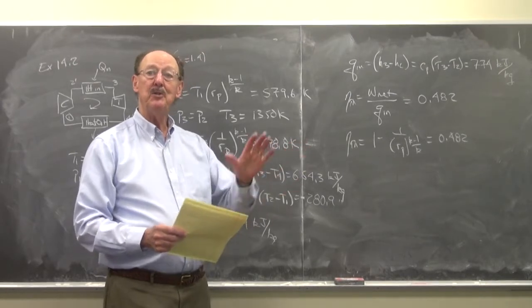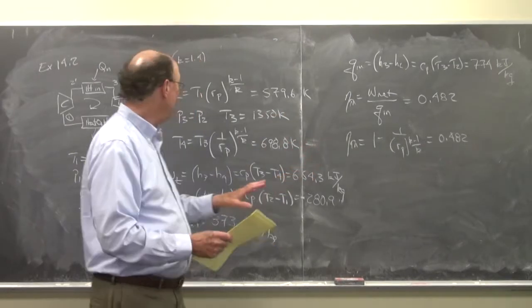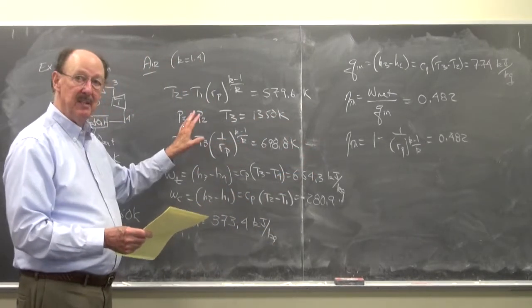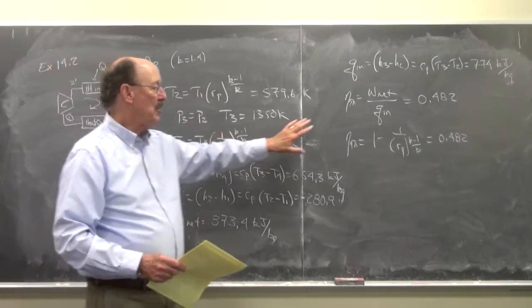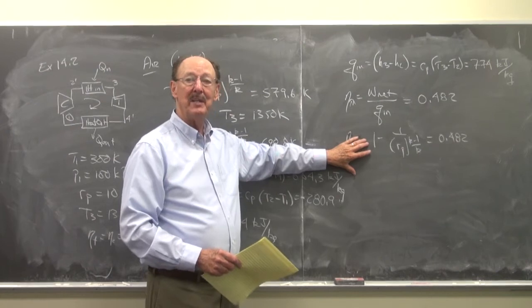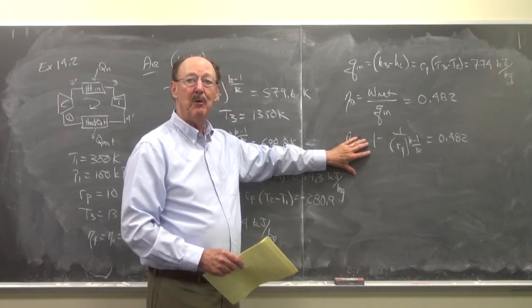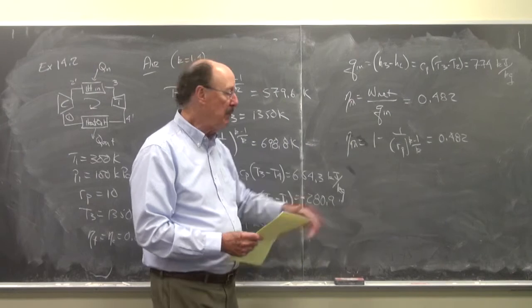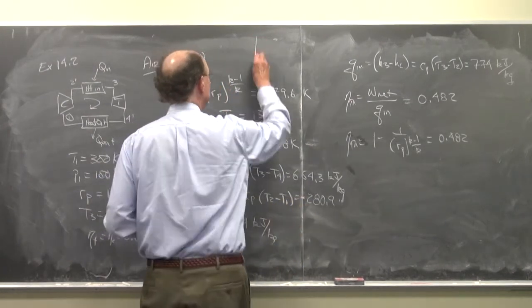However, when we use efficiencies, I can no longer use this. This depended on it being a symmetric cycle with isentropic relationships. When I introduce the efficiencies we can't do that.